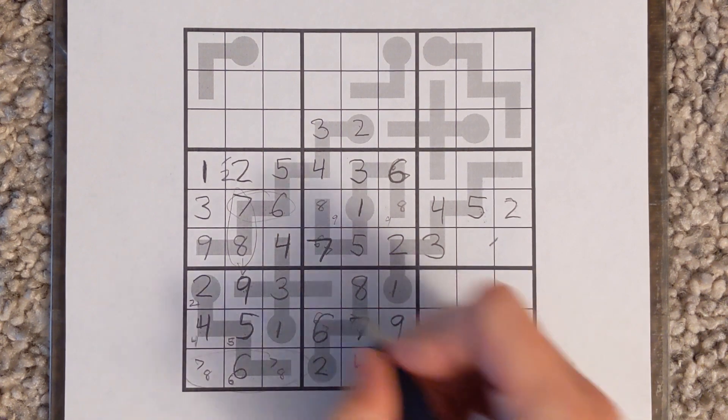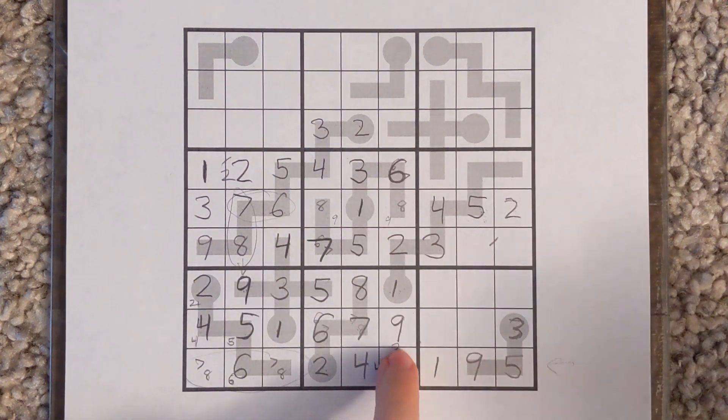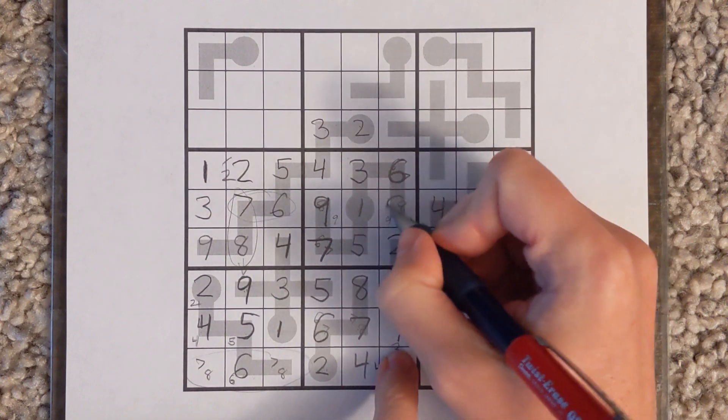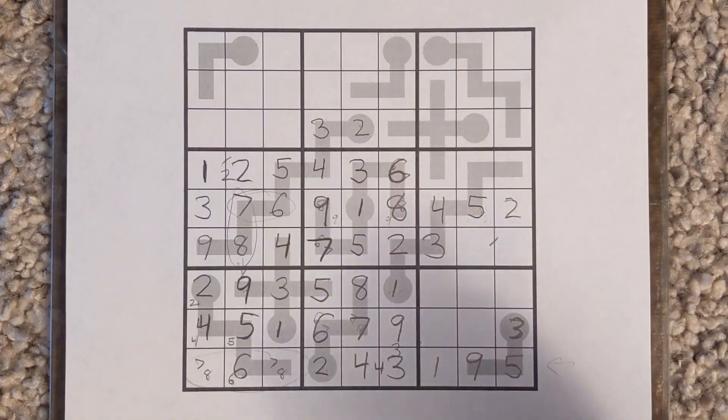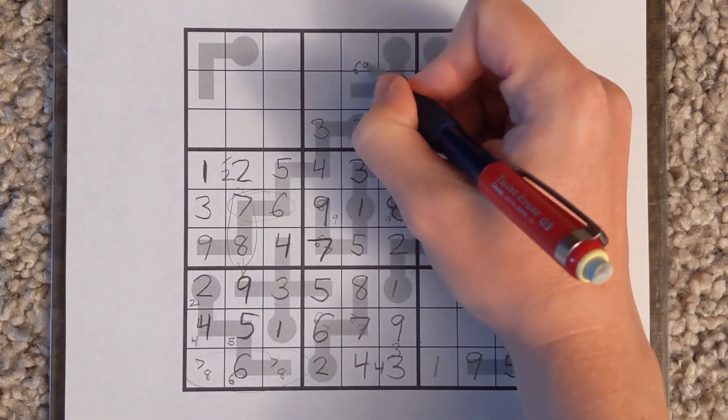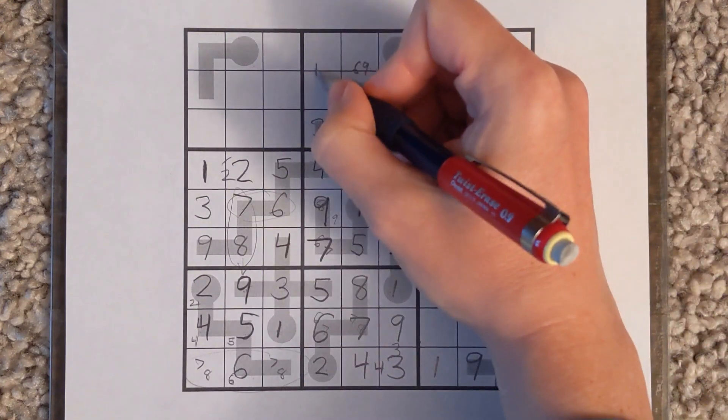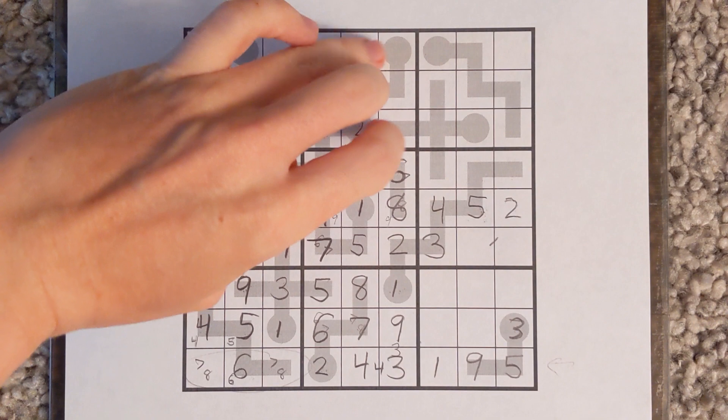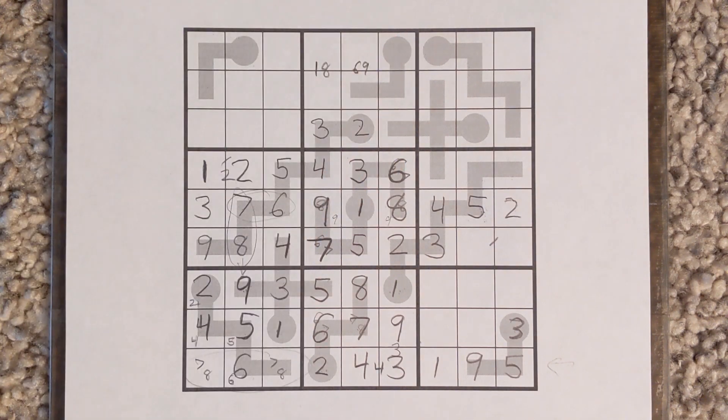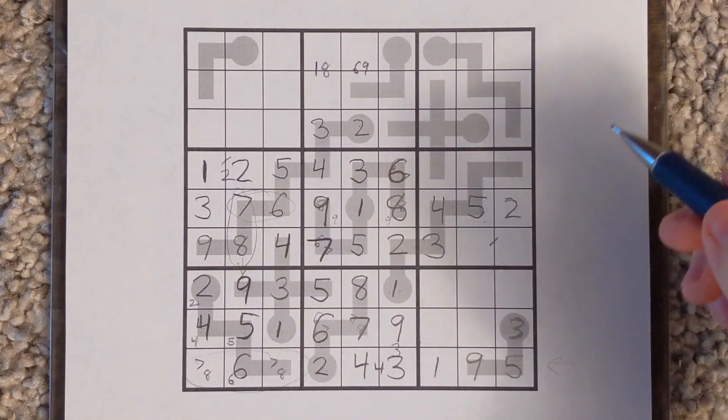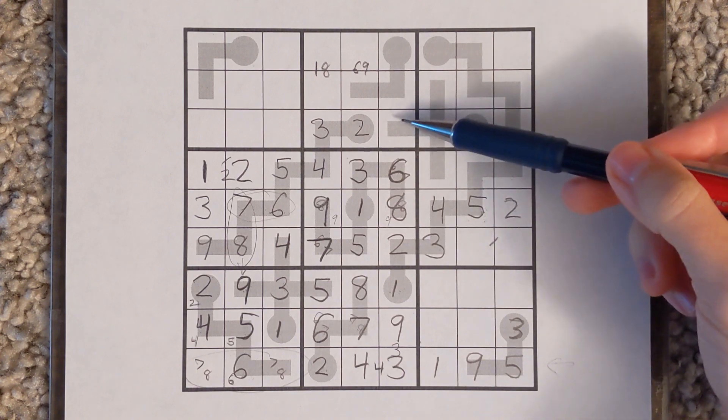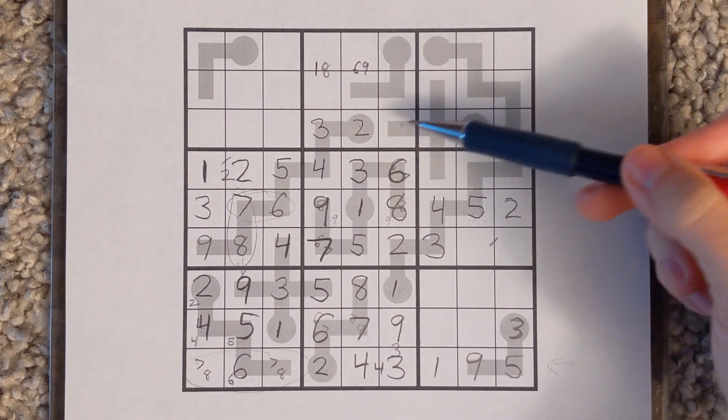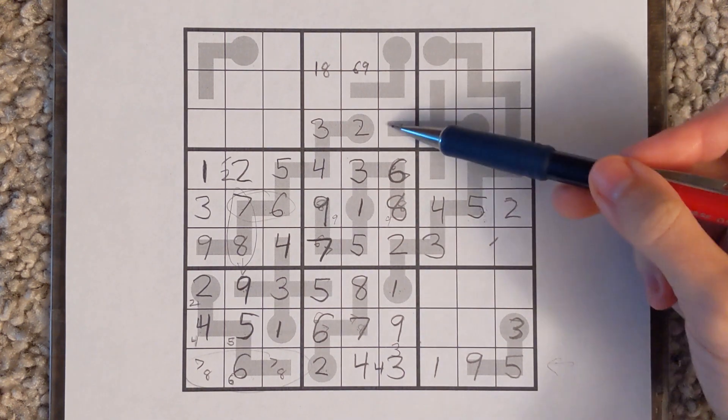This 9 has to now fill the last empty space. That then also forces these digits in the center. We've got a 6, 9 pair here. We've got a 1, 8 pair here. And we have the look of what is a 4, 5, 7 in this space.